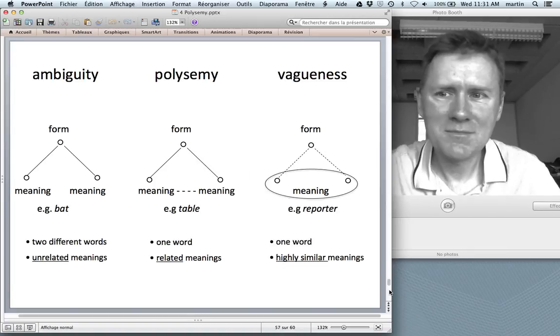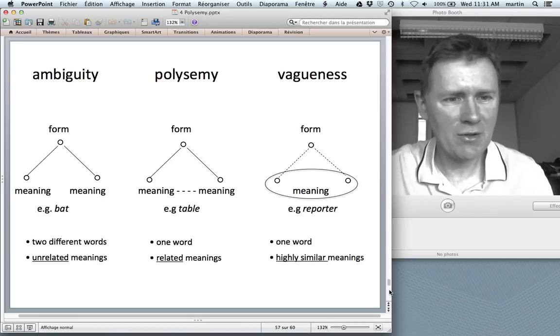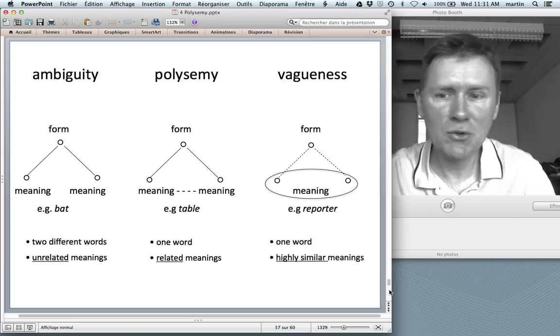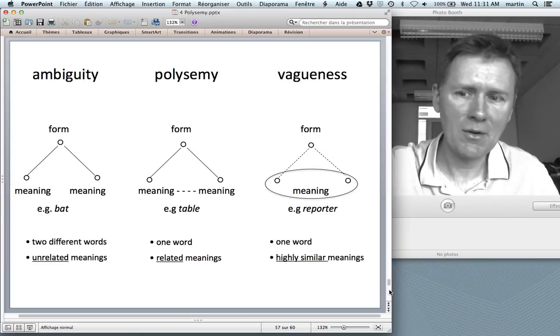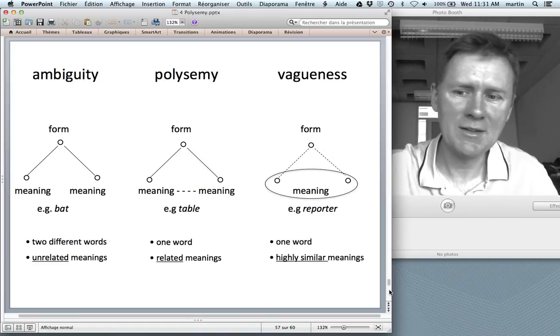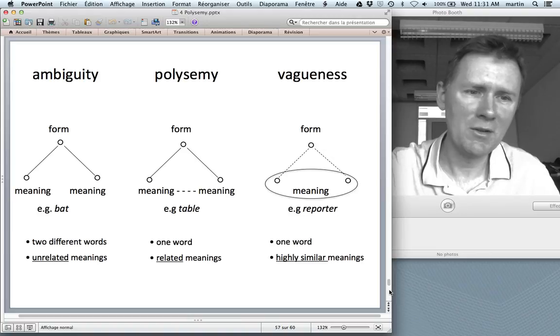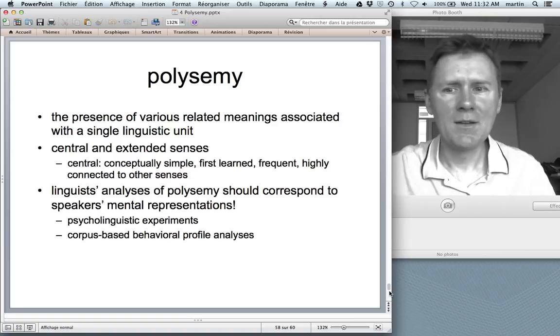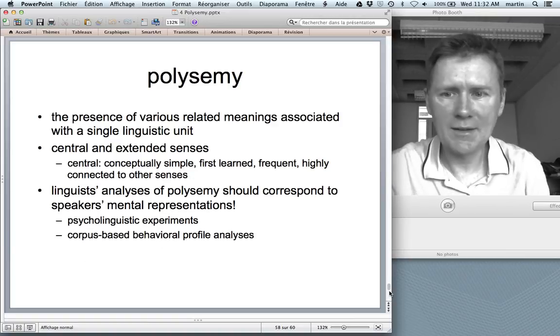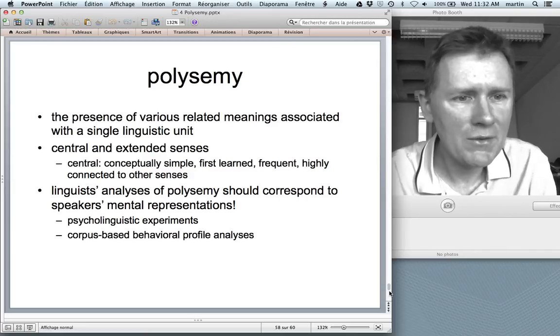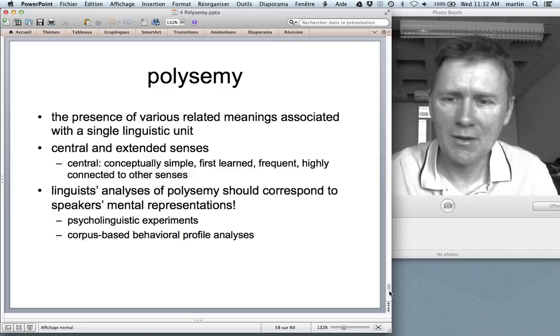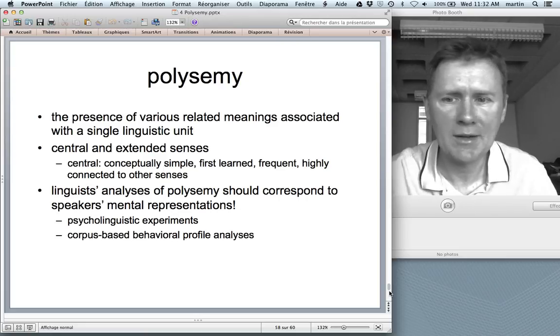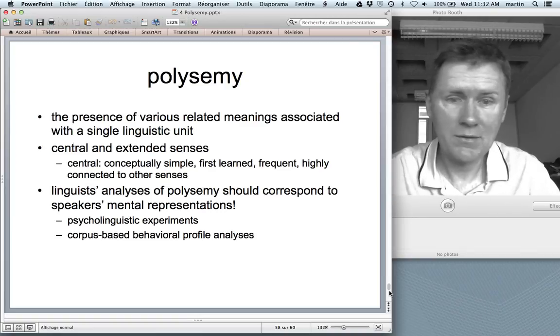Summing up. Ambiguity, polysemy, and vagueness, usually thought of as discrete different categories, but in cognitive linguistics, more thought about in terms of a continuum from a single form mapping on several meanings. But those several meanings are clearly distinct in ambiguity. They are related in polysemy, and they are almost non-distinguishable in vagueness. There are central and extended senses, where the central sense sort of corresponds to the prototype that we've talked about in the last video. They're conceptually simple, learned early on, they're frequent, and highly connected to other senses.